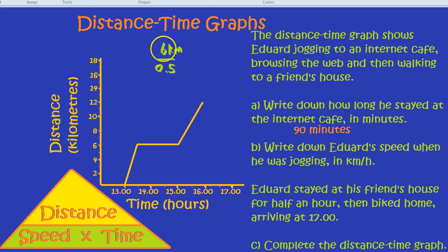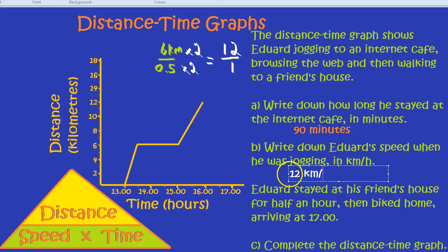There's many different ways of working out 6 divided by 0.5, but I think one you might like is simply getting rid of the decimal by timesing by 2. So, times by 2 to the top, and times by 2 to the bottom. And as if by magic, we have 12 now, because 6 times 2 is 12, and 1 at the bottom. A half times 2 is 1. We haven't changed the fraction. We've just made it easier for ourselves by doing the same thing to the top and the bottom. 12 divided by 1 is 12. So, Eduard's speed when he was jogging was 12 kilometers per hour.